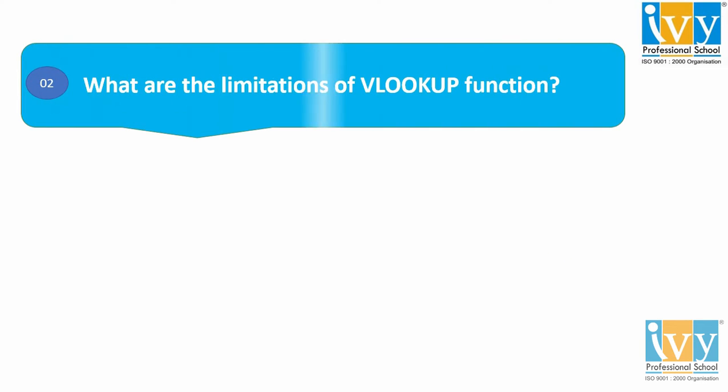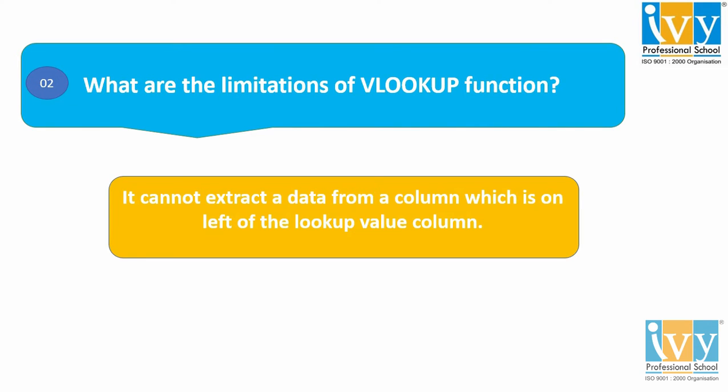Moving on to the next question: what are the limitations of VLOOKUP function? One of the biggest limitations of VLOOKUP is that it cannot look to the left. We cannot extract data from a column that is on the left side of the lookup value column — values to return must always be on the right-hand side.